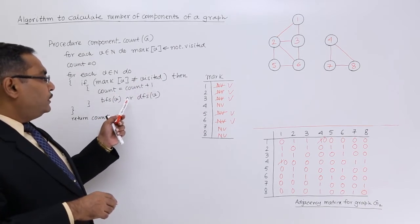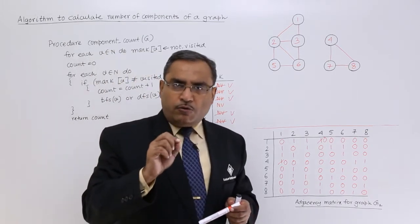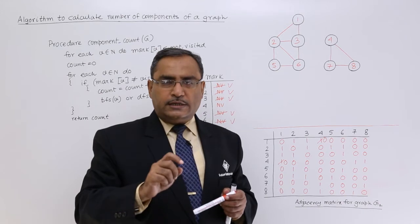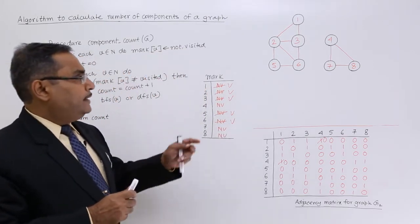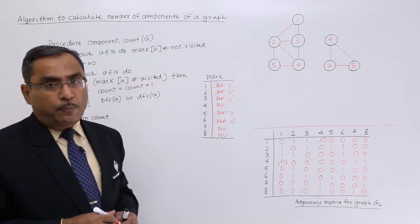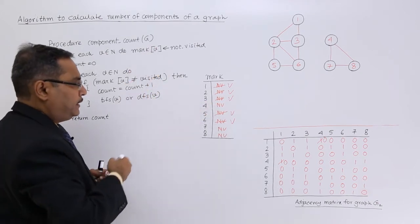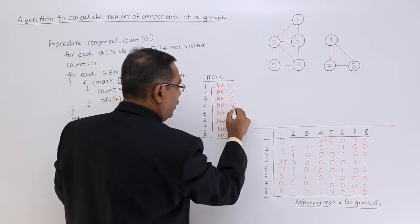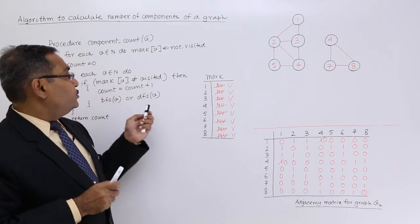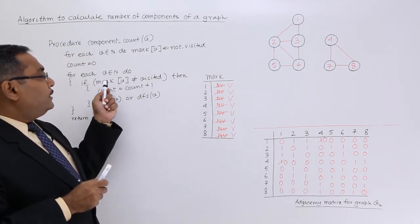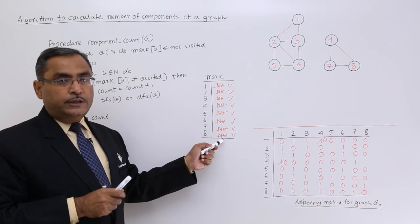Next time when the for loop checks other values of v, it will find node 4 as not visited. So it will call BFS or DFS again, incrementing count by 1. Initially count was 0; after the first call it became 1, and in the second call it becomes 2. This indicates that this particular graph has 2 components.